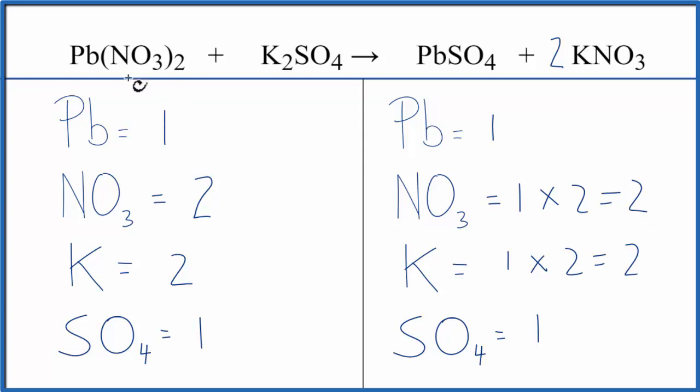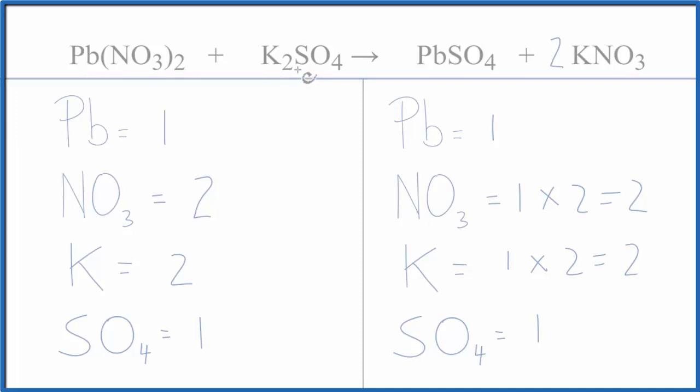So you can see how counting these polyatomic ions as just one thing if they appear on both sides of the equation really makes the balancing a lot simpler and less error-prone. This is Dr. B with the balanced equation for lead two nitrate plus potassium sulfate. Thanks for watching.